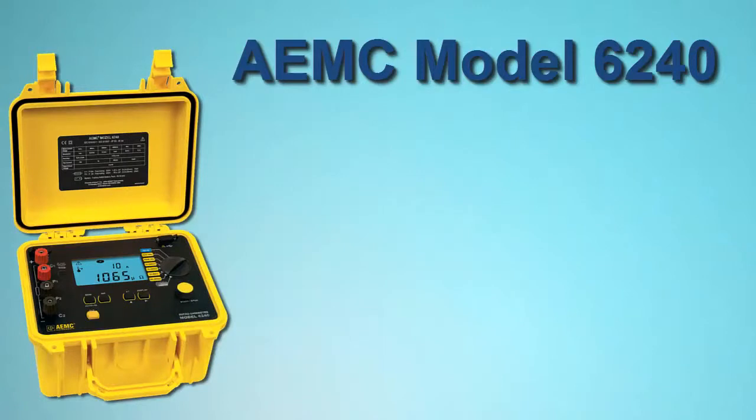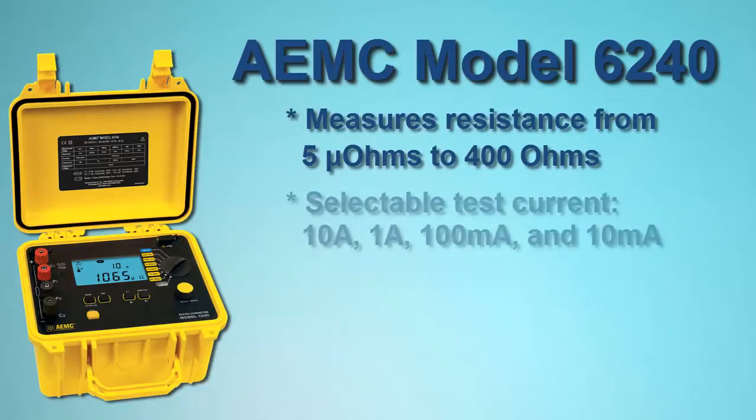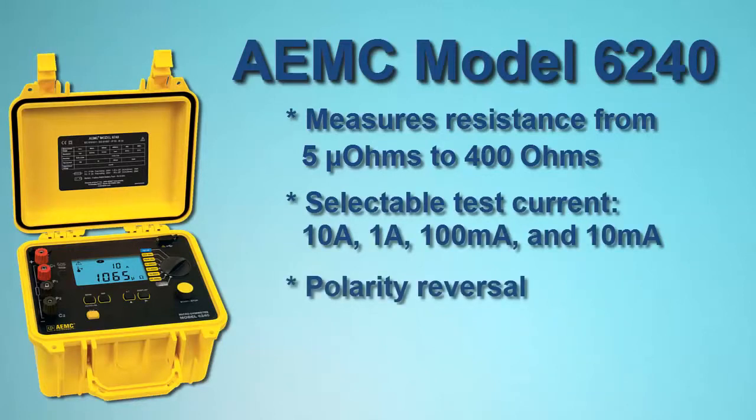The Model 6240 measures resistance from 5 micro-ohms to 400 ohms. The instrument provides selectable test currents of 10 amps, 1 amp, 100 milliamps and 10 milliamps, and includes a polarity reversal function. Up to 99 measurements can be stored in memory.